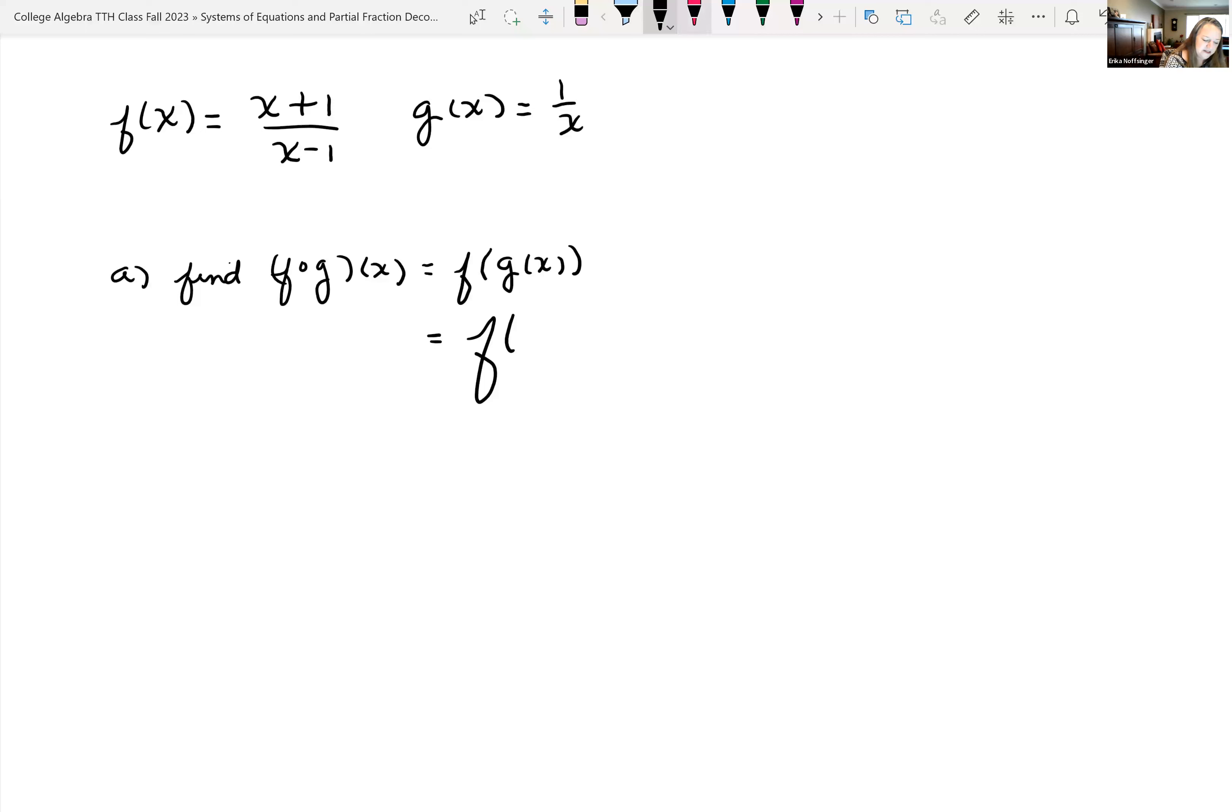So let's replace what g of x is. g of x is just 1 over x so I'm looking at f of 1 over x. So I'm technically going back into my f of x function and wherever I see an x I'm replacing it with 1 over x. So doing that I get 1 over x plus 1 all over, I see an x there, replace it with 1 over x minus 1.